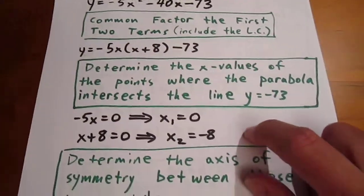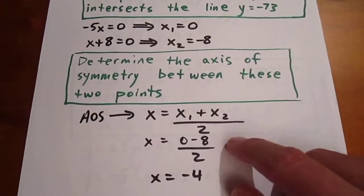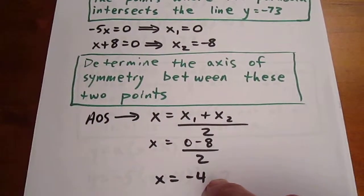We can determine the axis of symmetry by adding these two values and dividing by 2. And so the axis of symmetry of our parabola is x equals negative 4.